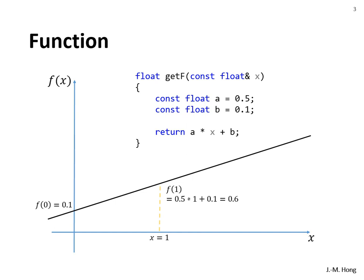This is an equation of a line, so we can draw it. The x-axis is the input and the y-axis is f(x). When input is 0, it returns 0.1, and when x is 1, the get_f function returns 0.6. So basically, this is a function of a line.